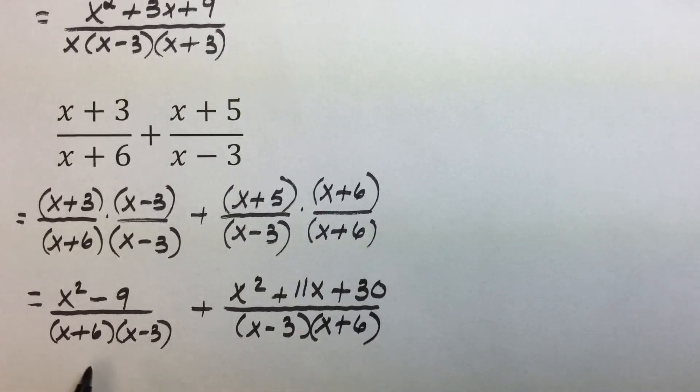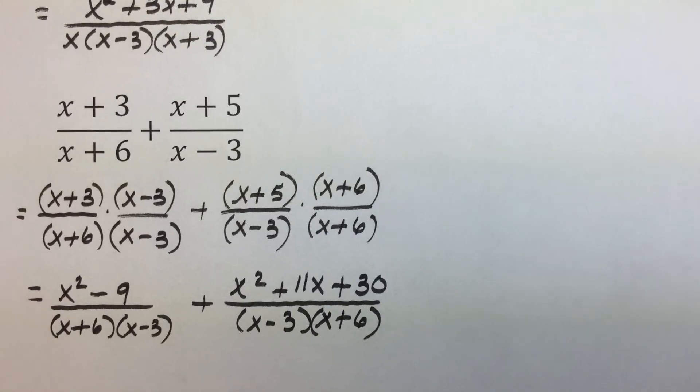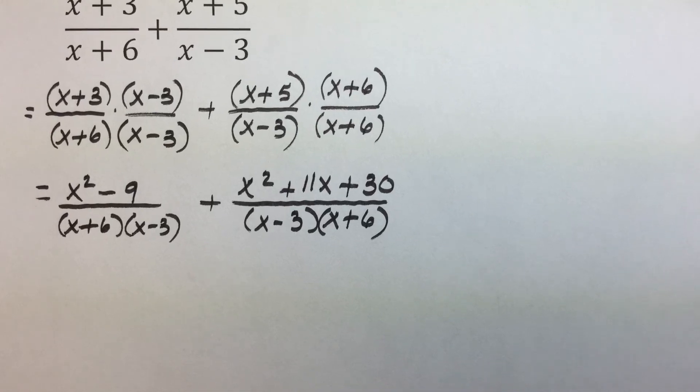Although they're not identical, we do have the same two factors in the denominators. Commutative property would show that they are the same. That means we can now go ahead and add those rational expressions together by combining the numerators.